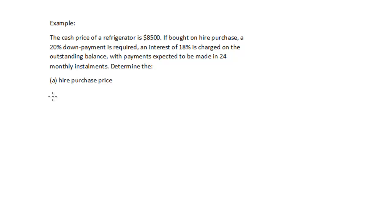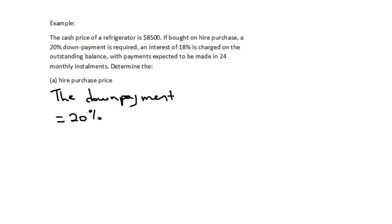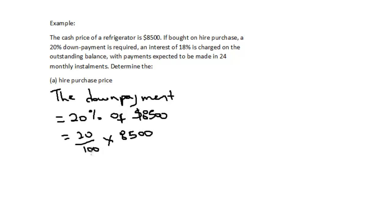The first thing we have to find is the down payment amount. The down payment is equal to 20% of the asking price, which is 20% of $8,500. That is 20 over 100 multiplied by 8,500. The zeros cancel and we get 20 times 85, which equals $1,700.